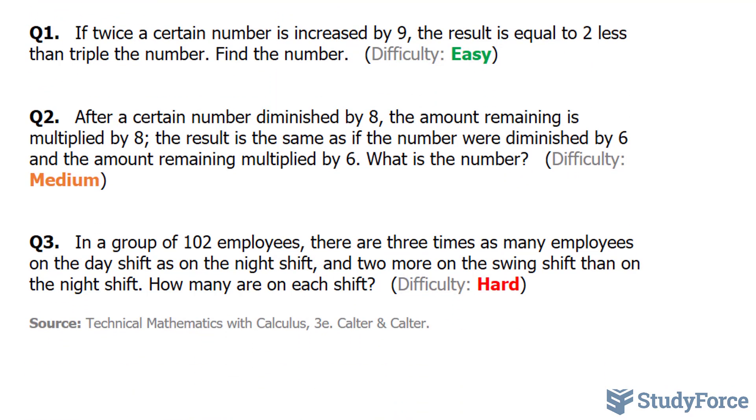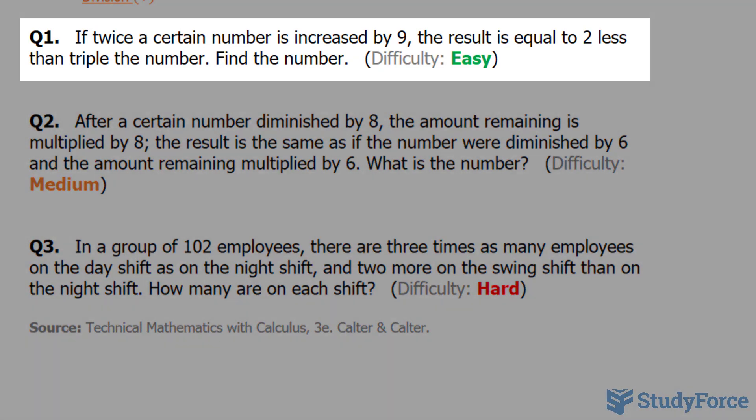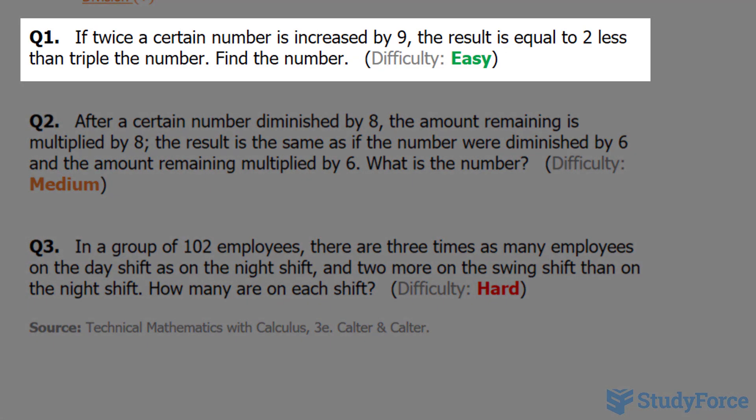Let's start with question one. In question one, they ask, if twice a certain number is increased by nine, the result is equal to two less than triple the number. Find the number.